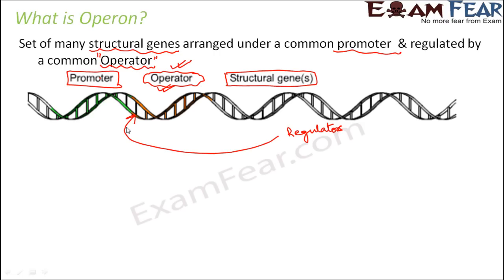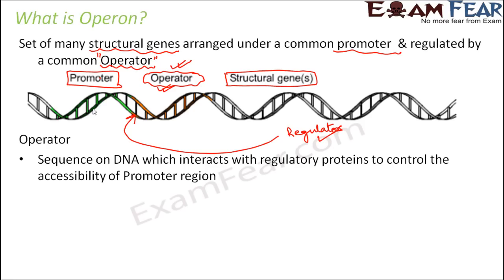The operator is a sequence on DNA which interacts with regulatory proteins to control the accessibility of the promoter region. They control the turning on or off of structural genes by making the promoter region accessible or non-accessible. The promoter initiates transcription by providing a binding site for RNA polymerase, which is the enzyme that causes transcription.